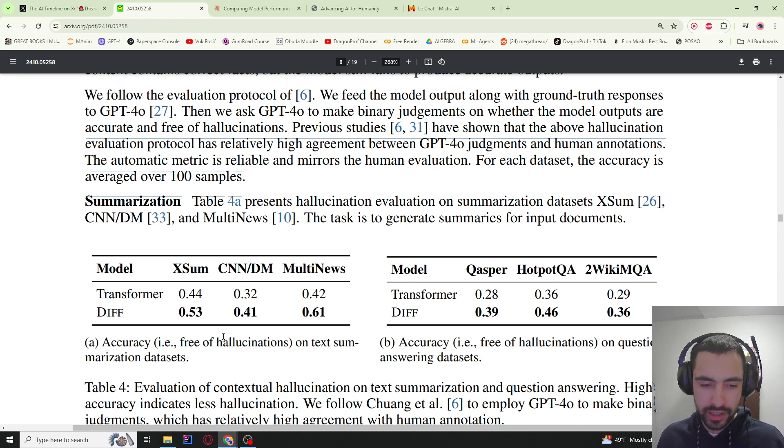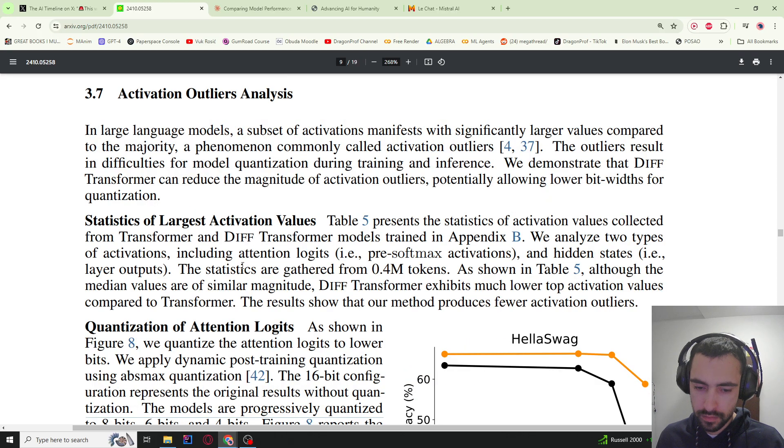Then they test for hallucinations. They got this text summarization dataset and question answering dataset. Usually they give the text and then ask a question, and the model is supposed to look into the text that it was given and answer the question. They evaluate it with GPT-4. They just ask GPT-4, give it the text and the answer and the question, and then ask if this was hallucinated based on this text or not. In previous studies, they found that GPT-4 judges similarly as humans, so you can automate judgment with GPT-4. We can see that diff achieves higher scores than classic transformer in text summarization dataset and question answering dataset.